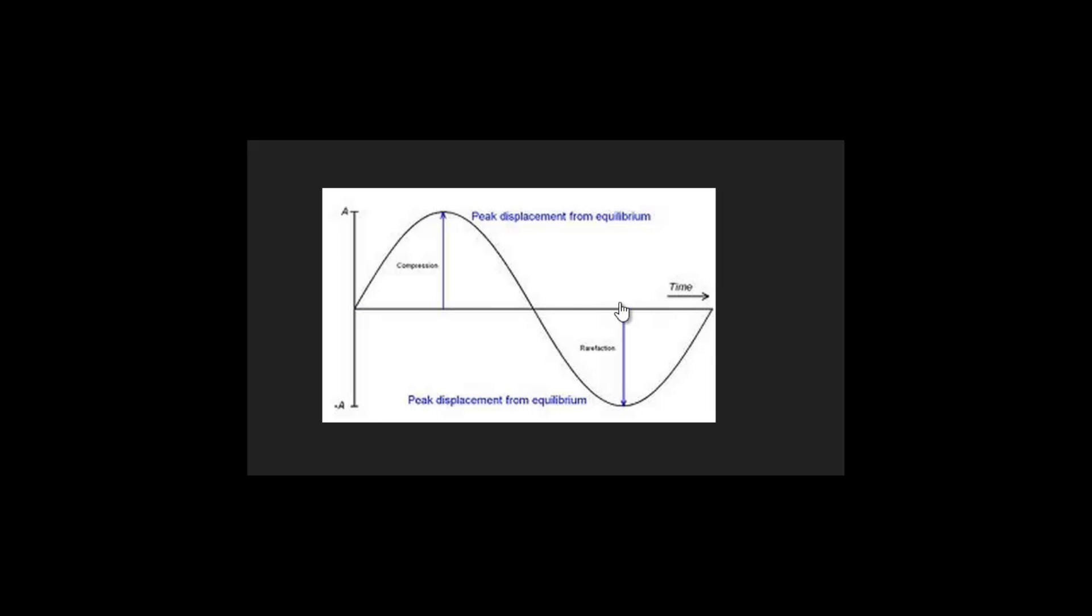Sound waves are measured in hertz, measured in cycles per second. So if we're talking bass frequencies, let's take 100 hertz for example—that's 100 cycles of the wave per second.